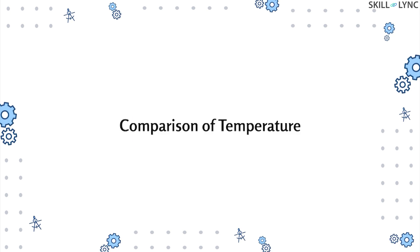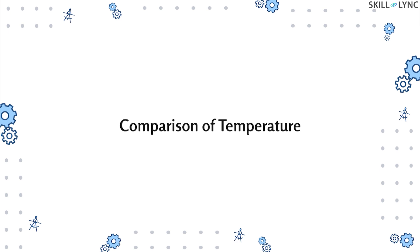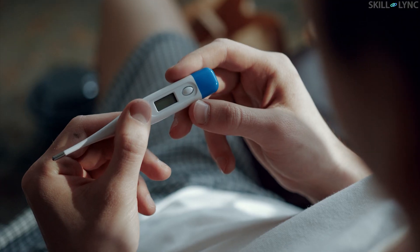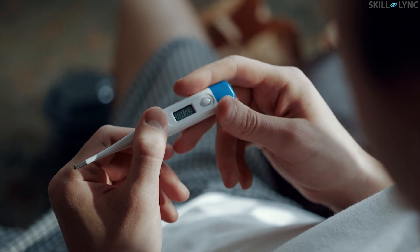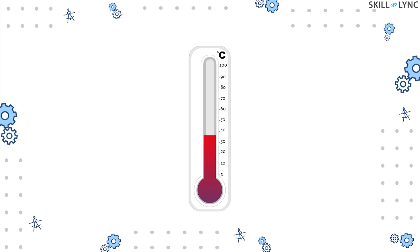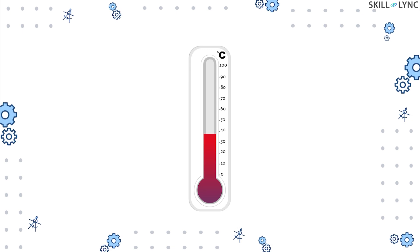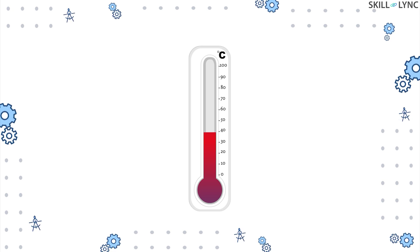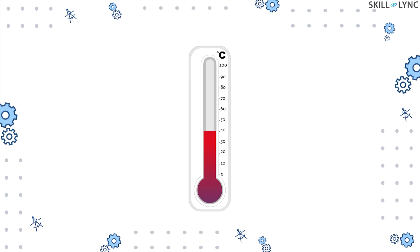The zeroth law is extremely important for thermodynamics as it throws light on the concepts of temperature and thermal equilibrium. Thanks to this law, comparing the temperature of two bodies has become simple. The easiest example is when using a thermometer. When a thermometer is used to check the temperature of a patient, the mercury inside the tube starts expanding due to increasing temperature, causing the height of mercury to increase. This height is then measured to know the body temperature of the patient.